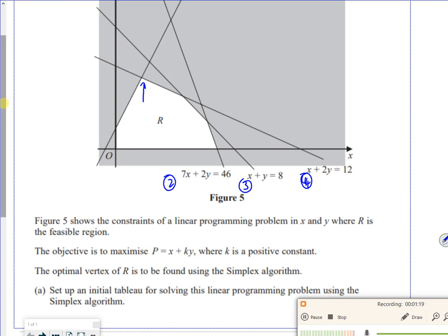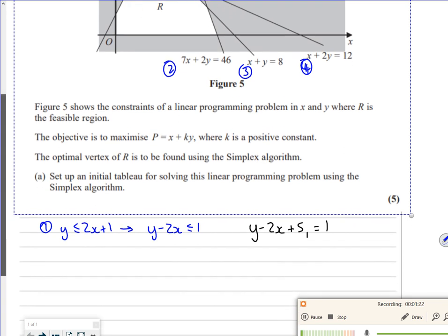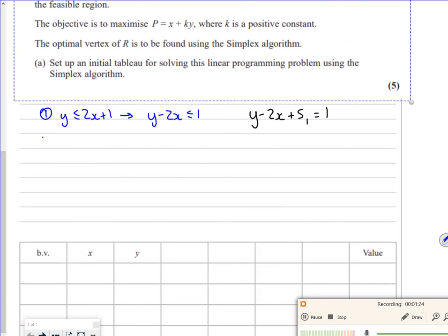So for the second one, it was 7x plus 2y is less than or equal to 46. So that transferred quite nicely to 7x plus 2y plus s2 is equal to 46.